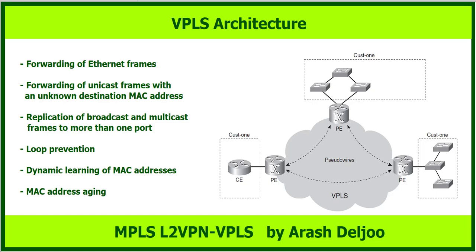Ethernet frames receive two MPLS labels before they are forwarded across the MPLS backbone — similar to Any Transport over MPLS, or AToM. In AToM, we add two labels to a frame. The top label is for reaching the next PE, and after that we have a VC label, or pseudo-wire label.